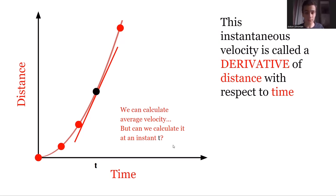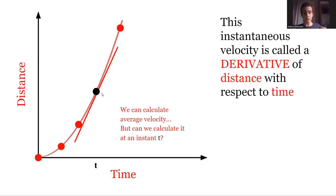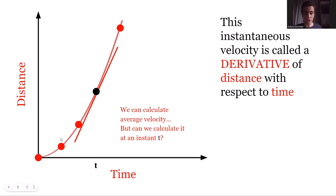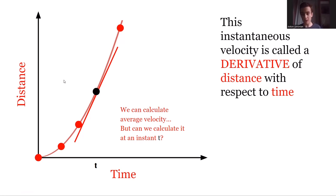Student question: how is average velocity used versus instantaneous velocity? Average velocity is the slope of the line between one point in time and another. Instantaneous velocity is the same thing, except that other point in time is infinitely close to the first point. Average velocity is an approximation; as the second point gets closer and closer to the desired point, it approaches the instantaneous velocity — which is the derivative.